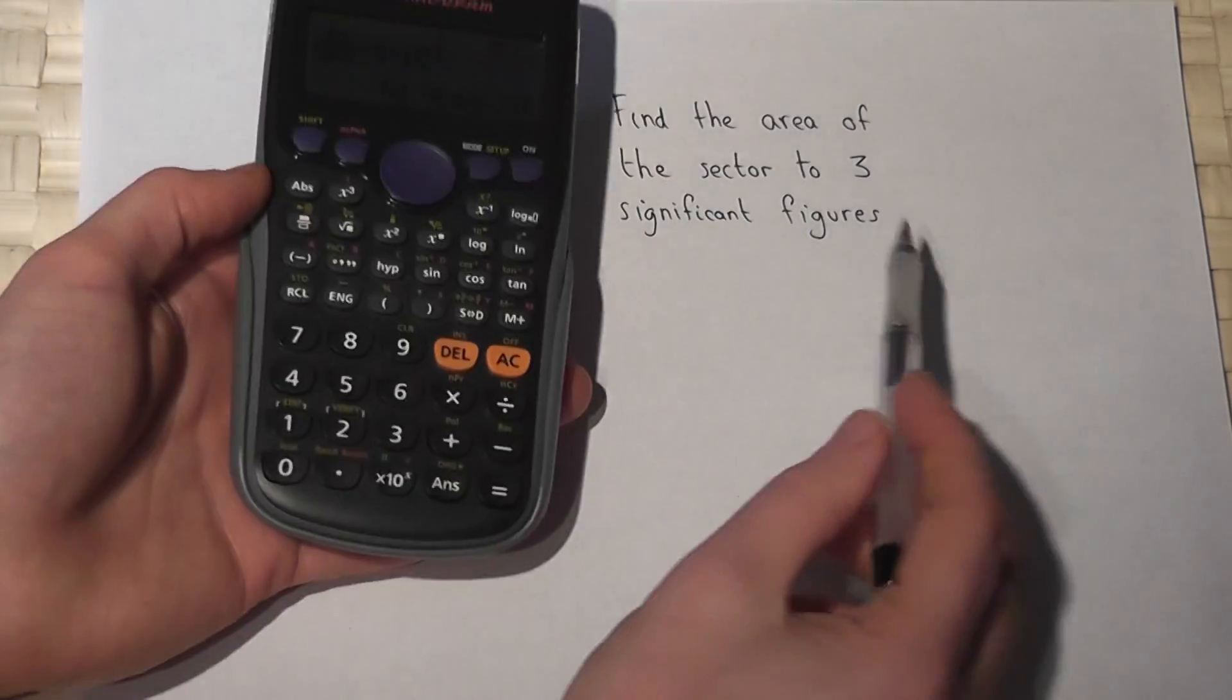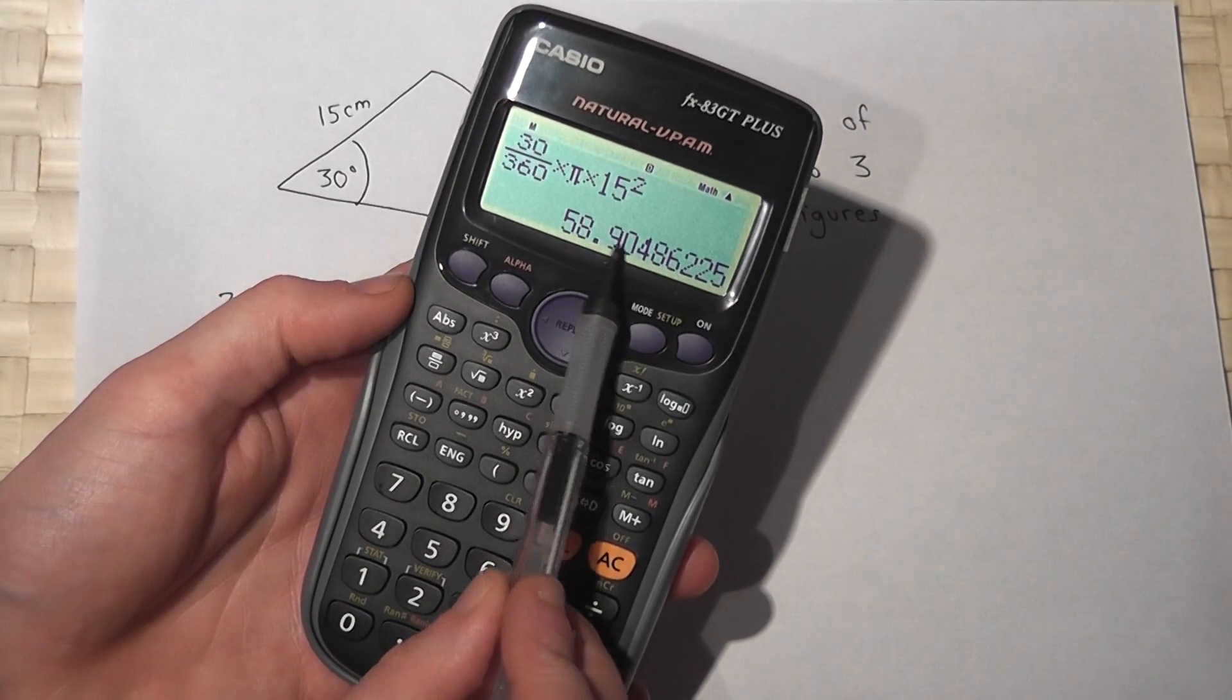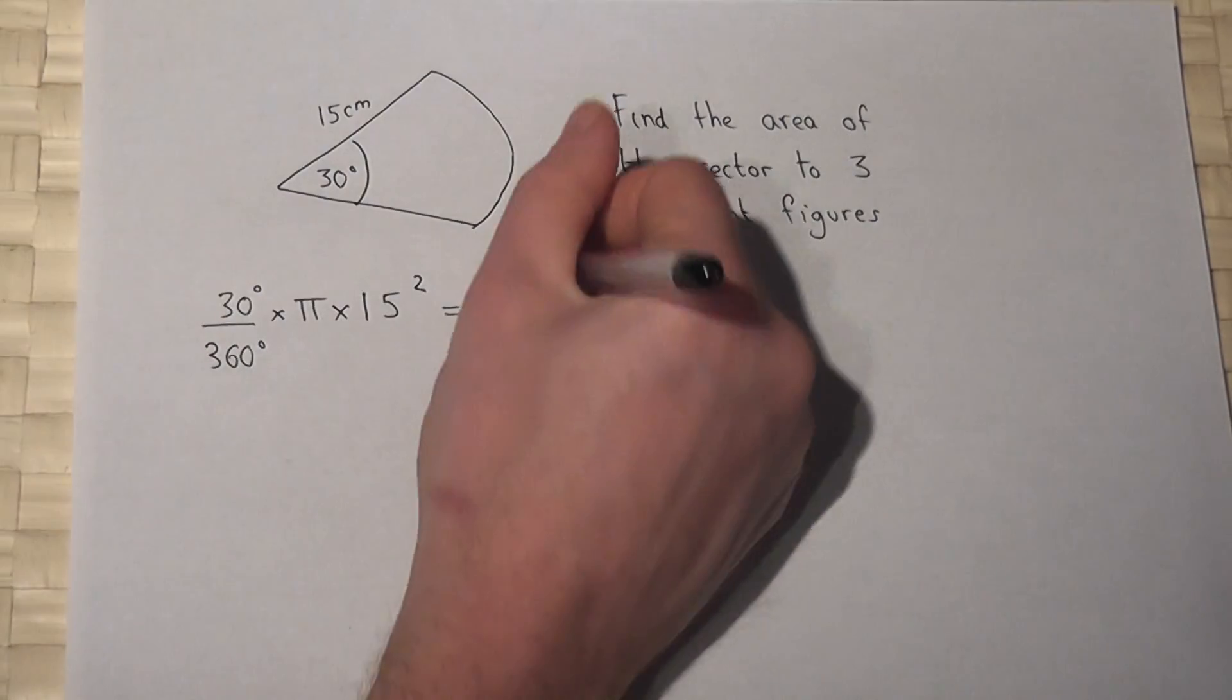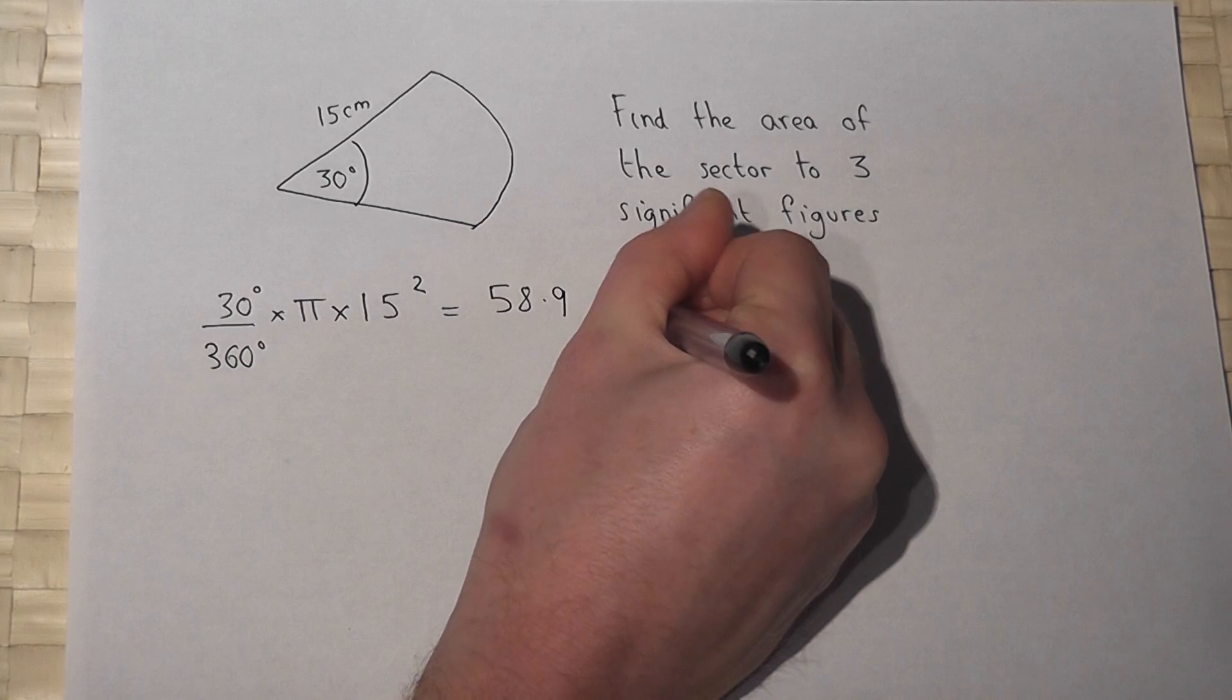We want it to 3 sf so 1, 2, 3. After the 9 is a 0 so don't change the 9. So it's 58.9 centimeters squared.